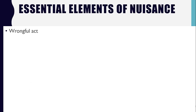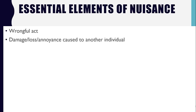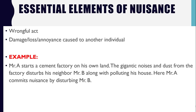What are the essential elements of nuisance? Two things are necessary to create nuisance. First is a wrongful act — the act must be wrongful and illegal. Second, because of that act, some type of damage, loss, or annoyance must be created. For example, Mr. A starts a cement factory on his own land. The noise and dust from the factory annoys his neighbor Mr. B, causing pollution in B's house and constant irritation. Even though A did not trespass on B's land, A's act on his own property constitutes nuisance.